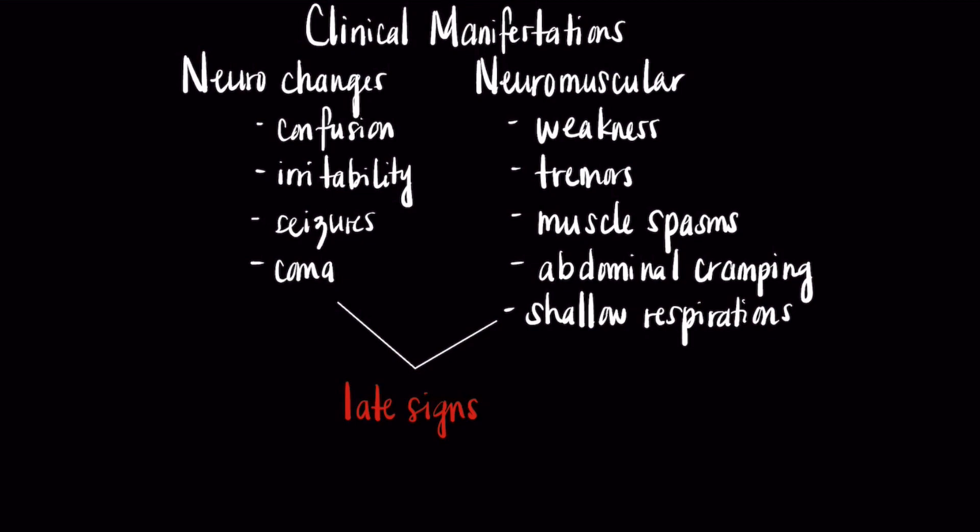When thinking about the clinical manifestations associated with hyponatremia, it's important to remember sodium's roles in the body. Since sodium regulates action potentials between nerves and muscle contractions, an imbalance in sodium leads to neurological abnormalities such as confusion, irritability, seizures, and coma, as well as neuromuscular abnormalities like weakness, tremors, muscle spasms, abdominal cramping, and shallow respirations.